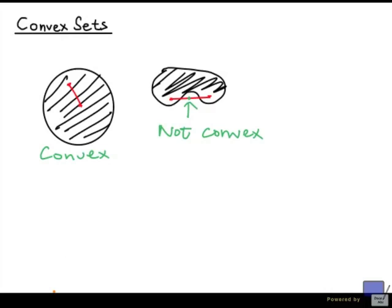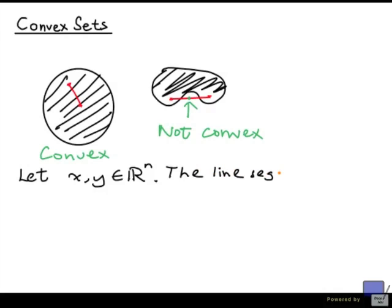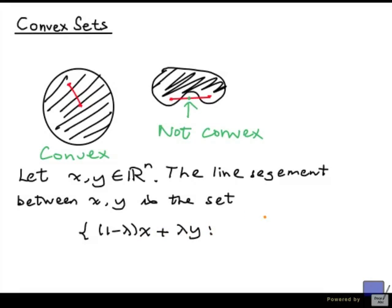What about N dimensions? First of all, we have to define what a line segment is in N dimensions. So let x and y be two elements in R^n. The line segment between x and y is the set (1-λ)x + λy, such that λ is anywhere from 0 to 1 inclusive. So this set is the set of points on the line segment between x and y.